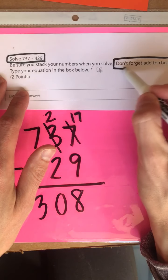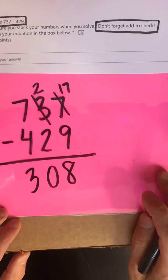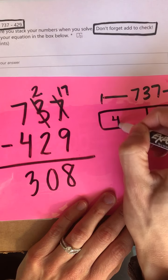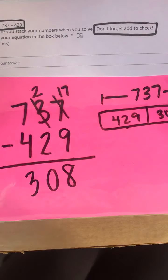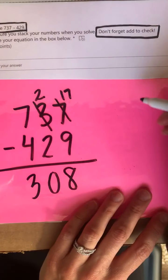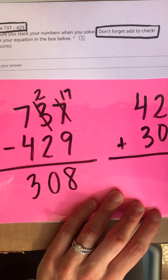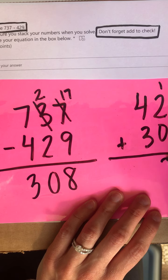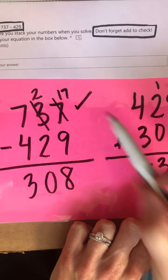Very good. It says don't forget to add and check. Remember, you have to add the two smaller numbers together to get the bigger number. Think of it like this: 737 was our whole. We knew 429 was a part. Now we know 308 is a part. So we have to add these two parts together to get our whole. So when you add to check, you're going to stack 429 plus 308. 9 plus 8 is a doubles plus 1 — 8 and 8 is 16 and 1 more is 17, so 7, carry my 1. 2 plus 1 is 3. And 4 plus 3 is also a doubles plus 1 — 3 plus 3 is 6 and 1 more is 7. My answer checks because I got 737.